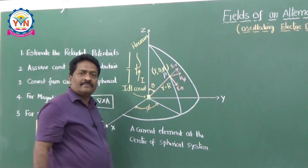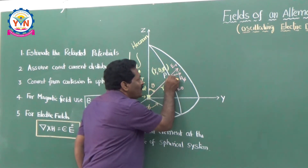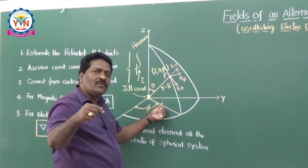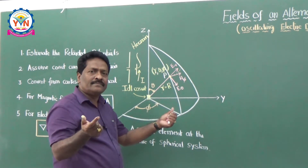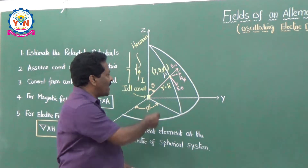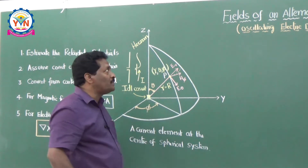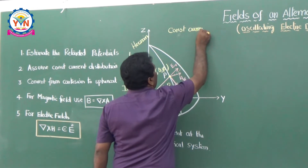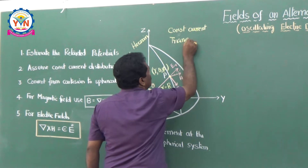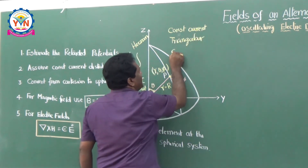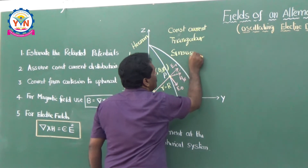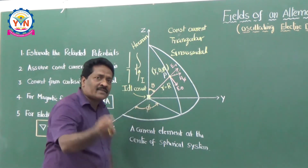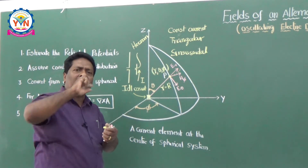Now I would like to write down the fields of this smallest current element. That expression can then be used for any type of large antenna with specified current distributions. In antenna theory there are different types of current distributions: constant current distribution, triangular current distributions, and sinusoidal current distributions. Depending upon the antenna, we take different types of current distributions. But here, as I am taking the smallest antenna element, I am taking only constant current distribution.